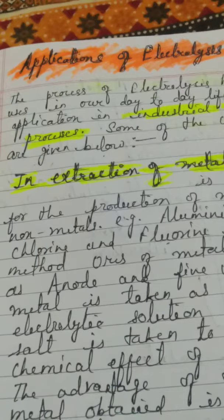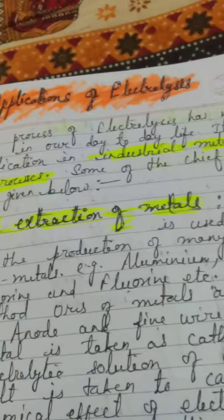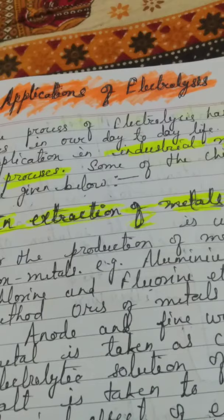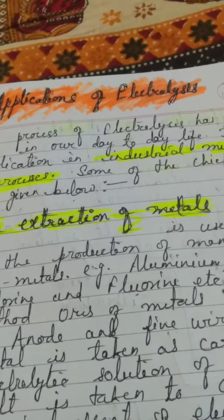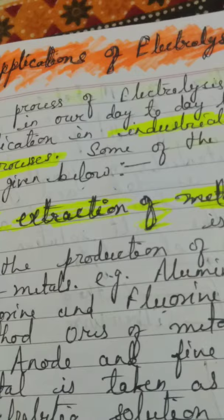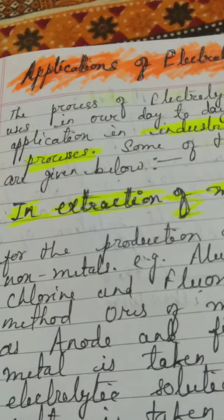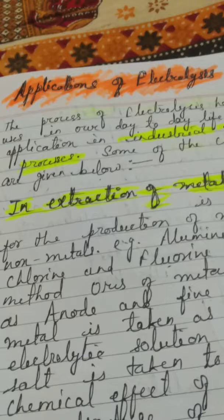So children, today I have decided to finish the chapter on Chemical Effect of Electric Current by taking the last topic, which will be the applications of electrolysis. In the previous video of this chapter, I gave you the idea of electrolysis — how we perform it at the smaller scale or at the larger scale, and what is the aim to carry on the electrolysis process.